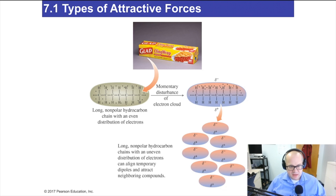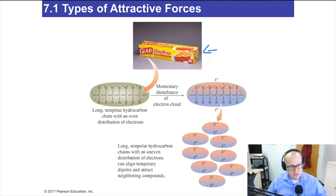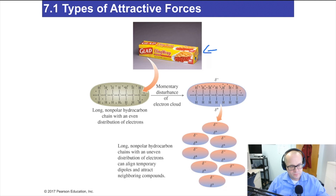London forces are the attractive forces that result from an uneven distribution of electrons around a molecule or atom. Cling wrap is a great example of a product that uses London forces to hold on to things — it repels water, and it's really useful. The more London forces you can have, the more attraction you can have for another molecule that is like you.